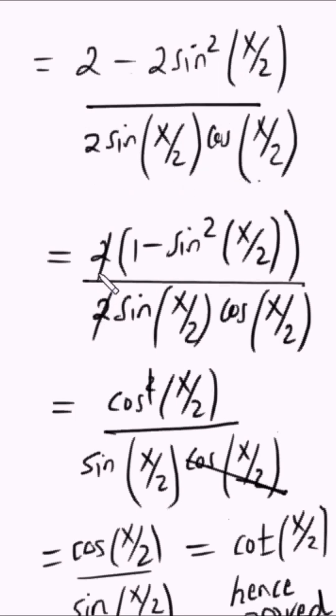If I factor out 2 in the numerator, I remain with 1 minus sin squared of x over 2. I can divide 2 in the numerator and 2 in the denominator.